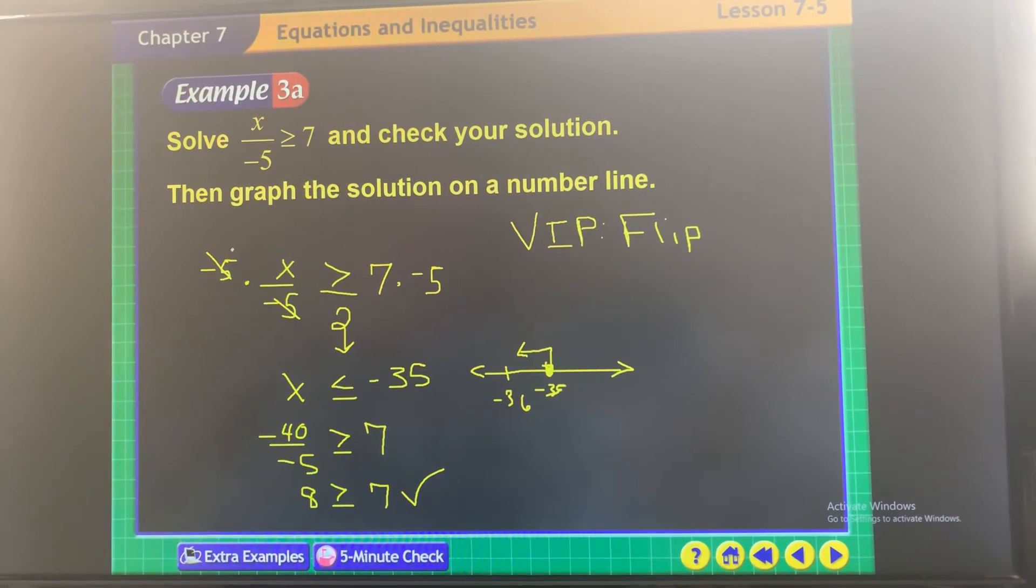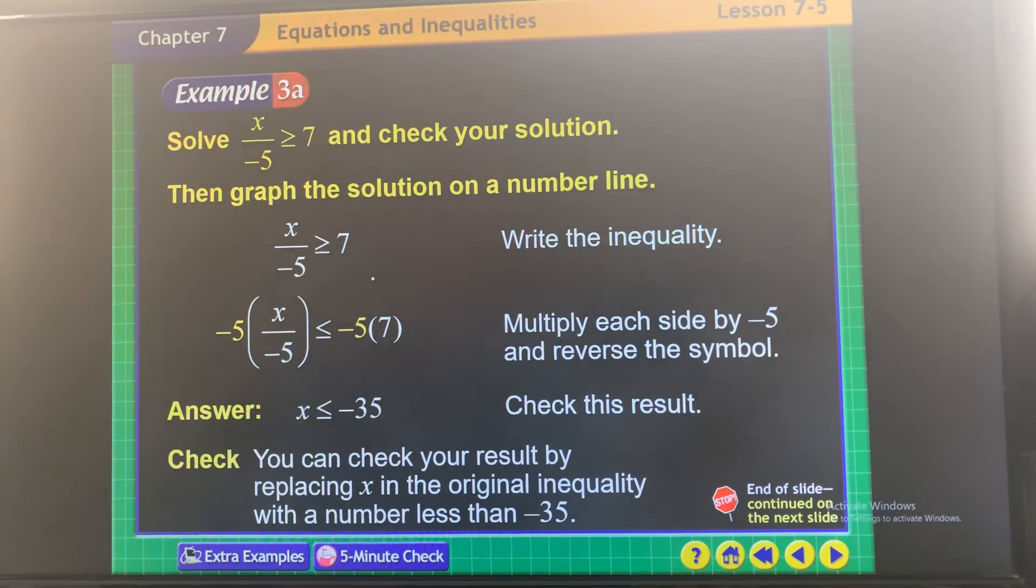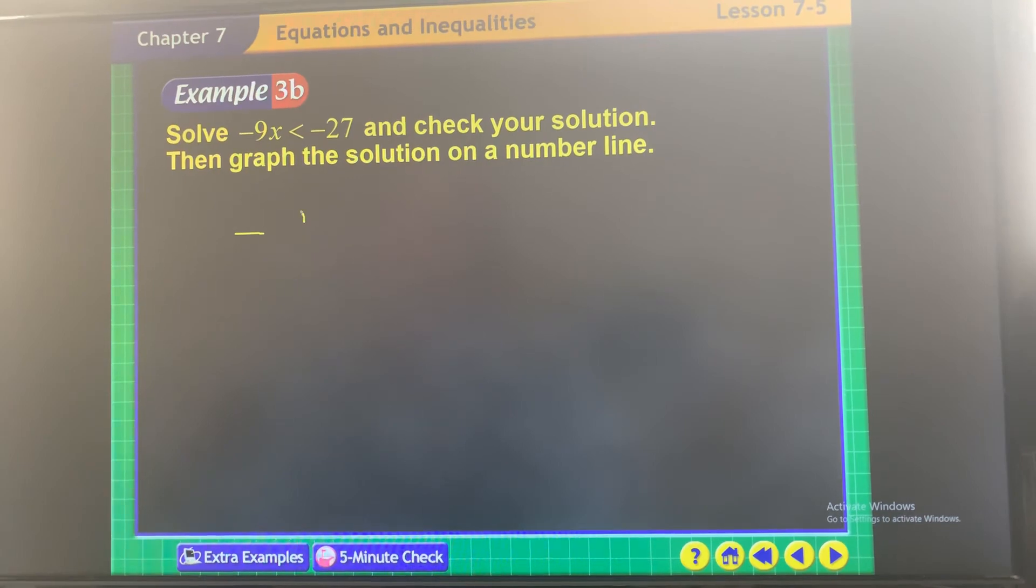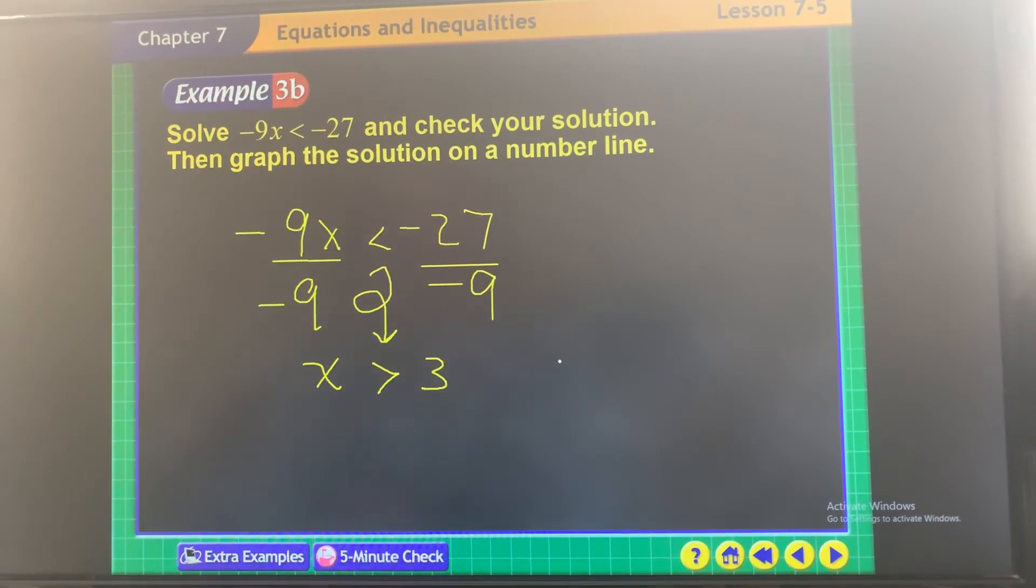When you are multiplying or dividing by a negative value, okay, not when you're adding, only when you're multiplying or dividing. So you look at this one, are you going to flip it? Yeah, you're going to flip it because when you go and solve this inequality, you're going to divide by a negative 9. That means flip. So you're just going to go in the opposite direction and you're going to get x is everything greater than 3. Pick a value greater than 3, 4, 5, whatever you want, 10. Good idea. Negative 9 times 10, is that less than negative 27?